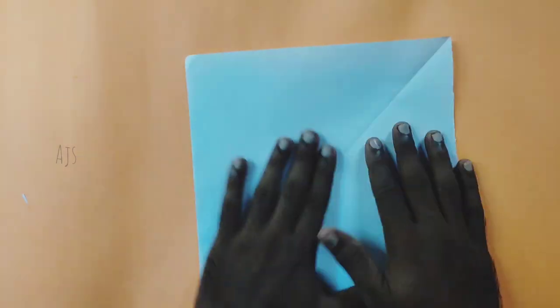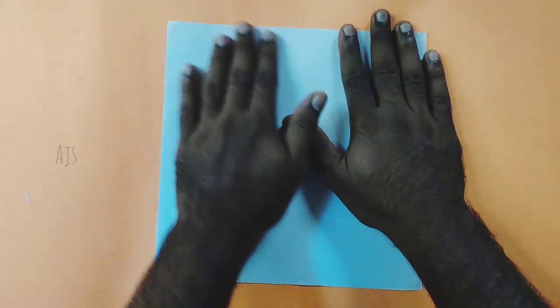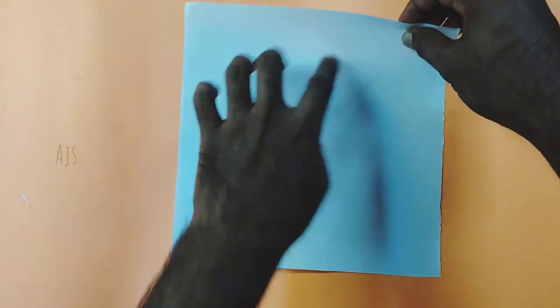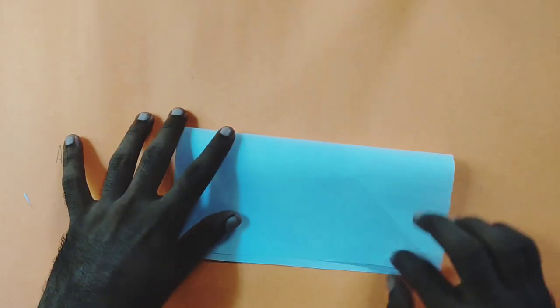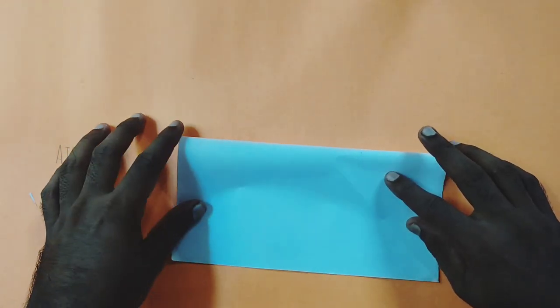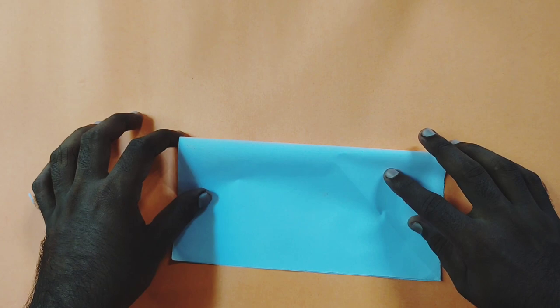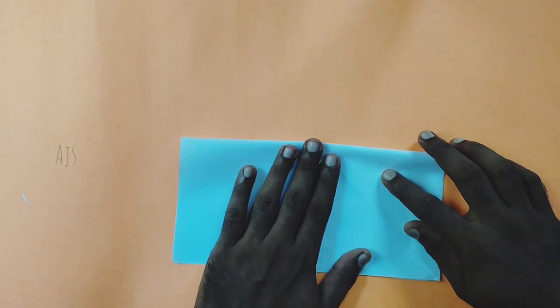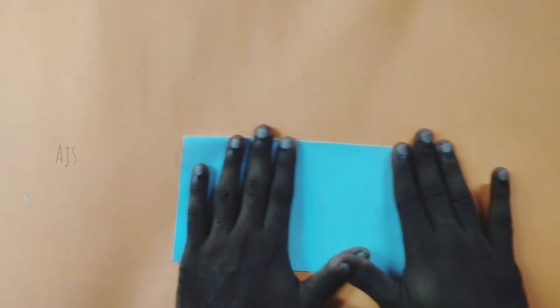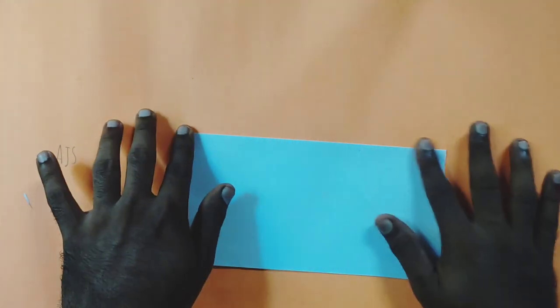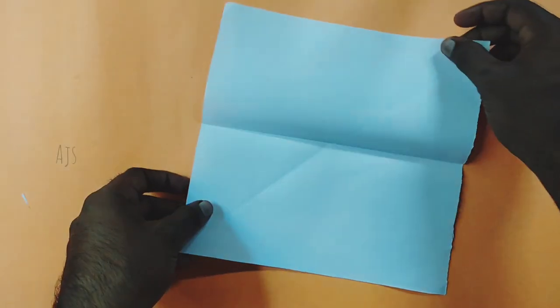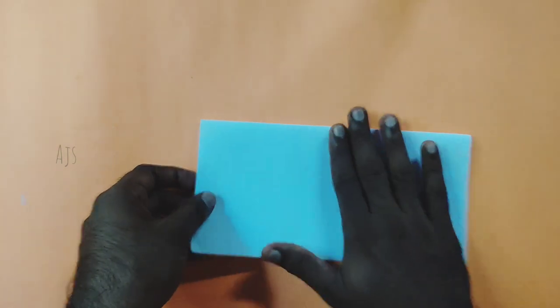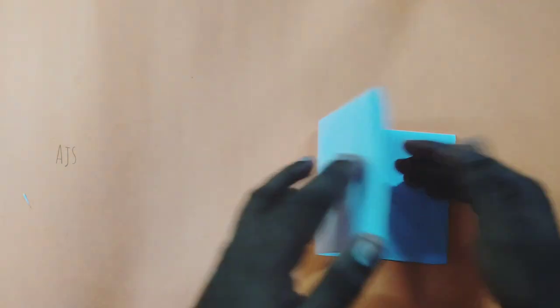Open the paper. Look children, we got a square. Fold the paper down. Fold again.